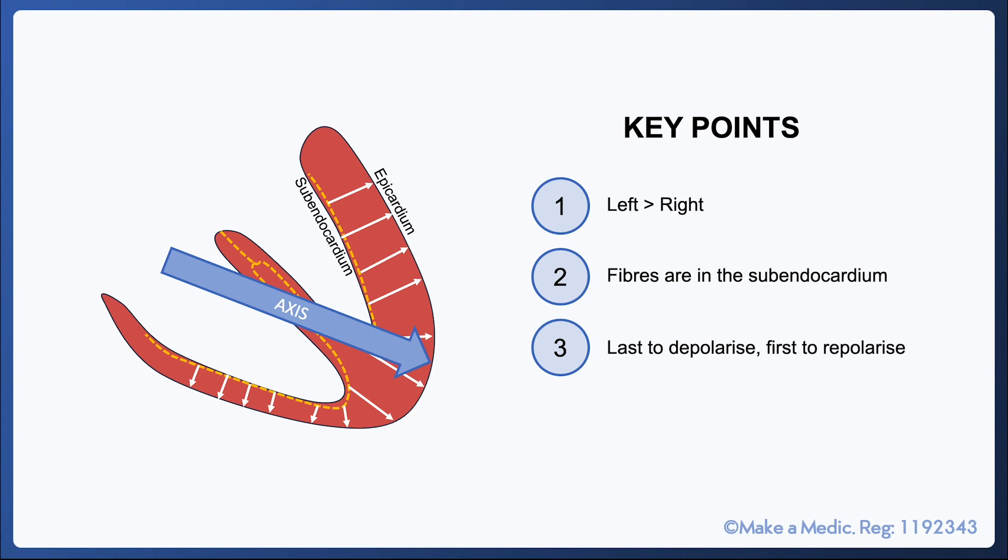The second point is that the specialized fibers of the conducting system are located within the subendocardium, in the innermost layers of the heart. This means that the heart depolarizes outwards from the subendocardium towards the epicardium.